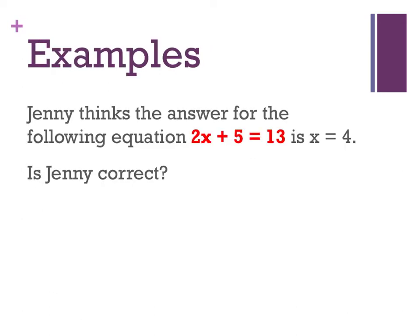We've got this example here and it says Jenny thinks the answer for the following equation 2x plus 5 equals 13 is x equals 4. Is Jenny correct? So what I'm saying here with the equation is everything on this side is equal to everything on that side. If Jenny's got the correct answer, the equation should balance. So let me try substituting Jenny's answer in to check to see if she got it right.